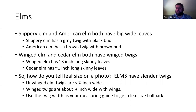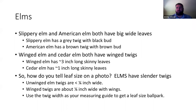That bud may have some black on the scales, but brown is the predominant color. Slippery elm and American elm do not have winged twigs, whereas winged elm and cedar elm do. Winged elm and cedar elm are going to be pretty hard to tell apart. Use the leaf size — winged elm has notably longer leaves than cedar elm. Both winged elm and cedar elm leaves look about half the width of slippery or American elm, so they're narrower leaves.